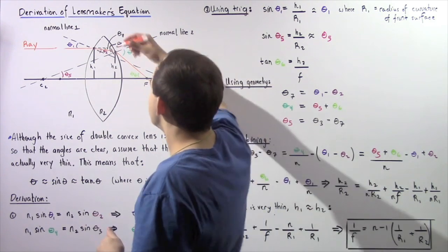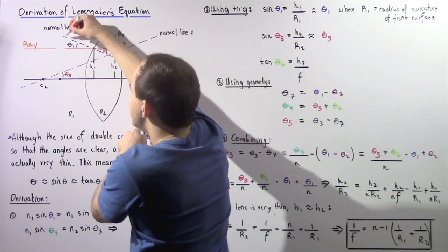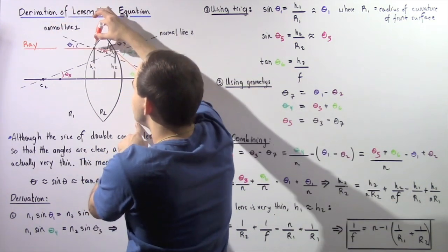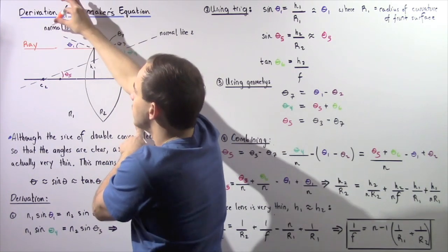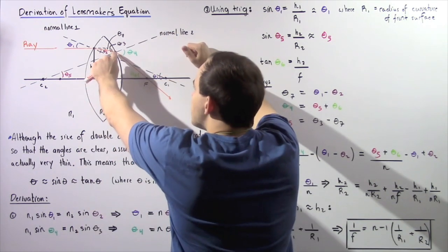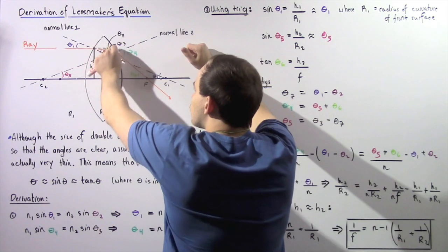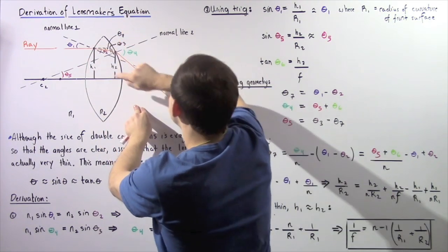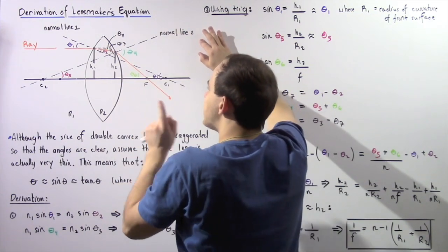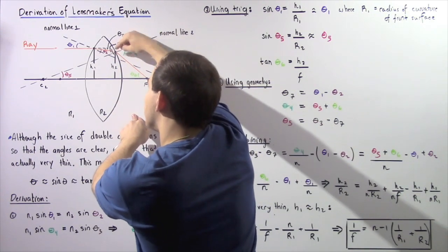The point where the ray hits the front surface has a normal line — let's call it normal line 1. The point where the inner ray refracts at the back surface has a normal line — let's call it normal line 2 — which is normal to the back surface at that particular point.